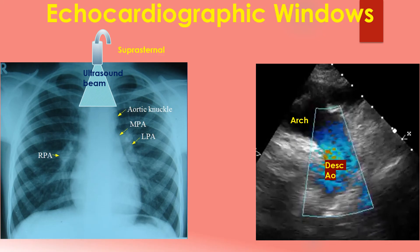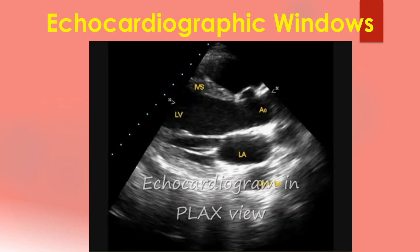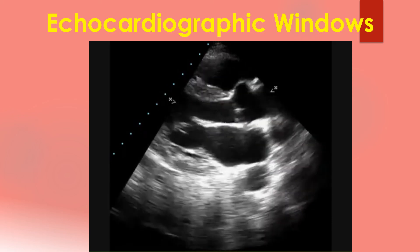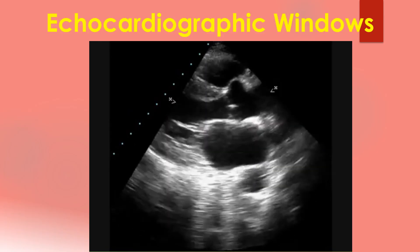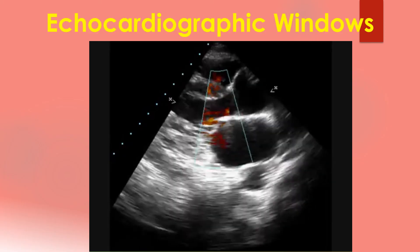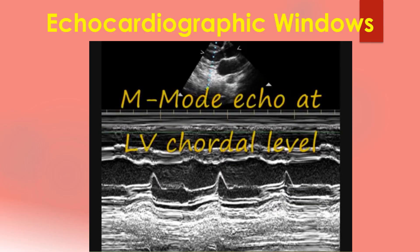Apart from these standard views, other modified views may also be used in certain circumstances. A right parasternal view may be used when the heart is enlarged to assess the tricuspid regurgitation jet, and a dilated ascending aorta will also be visible. An annotated video of a normal colour Doppler echocardiogram illustrating various views and an M-mode tracing is shown here, covering the parasternal long axis view with colour Doppler and M-mode, parasternal short axis view, apical four-chamber view and suprasternal view.